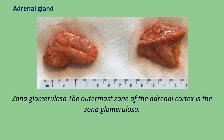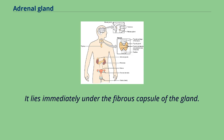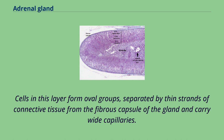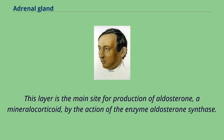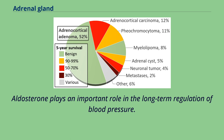The outermost zone of the adrenal cortex is the zona glomerulosa. It lies immediately under the fibrous capsule of the gland. Cells in this layer form oval groups, separated by thin strands of connective tissue from the fibrous capsule and carry wide capillaries. This layer is the main site for production of aldosterone, a mineralocorticoid, by the action of the enzyme aldosterone synthase. Aldosterone plays an important role in the long-term regulation of blood pressure.